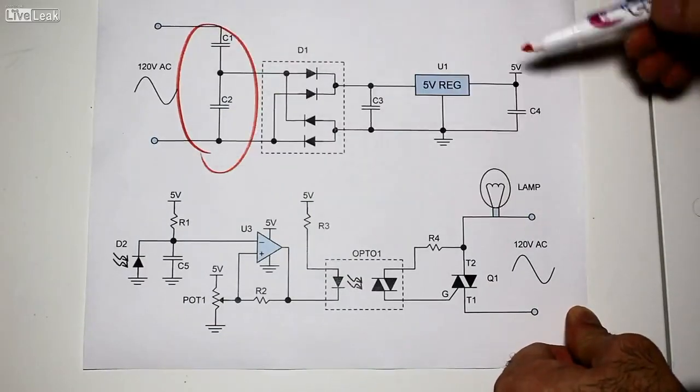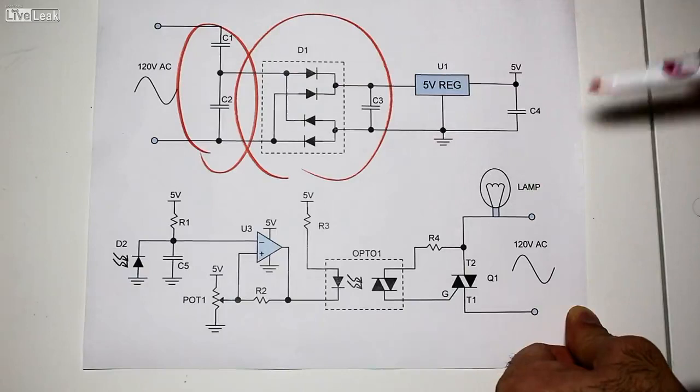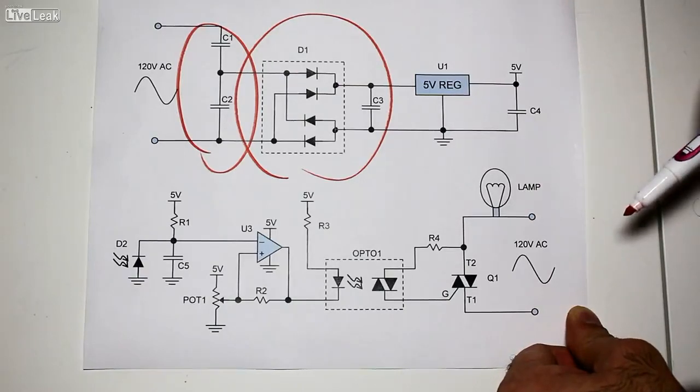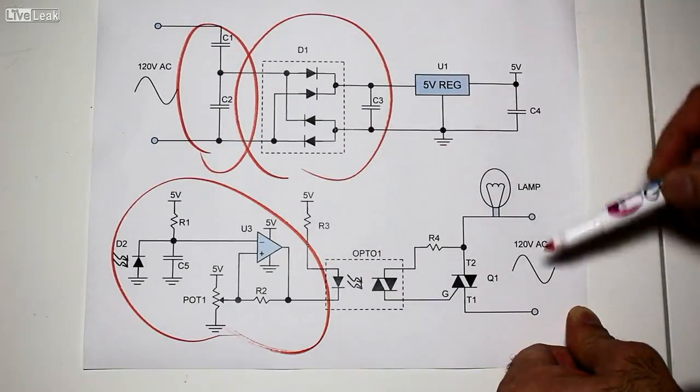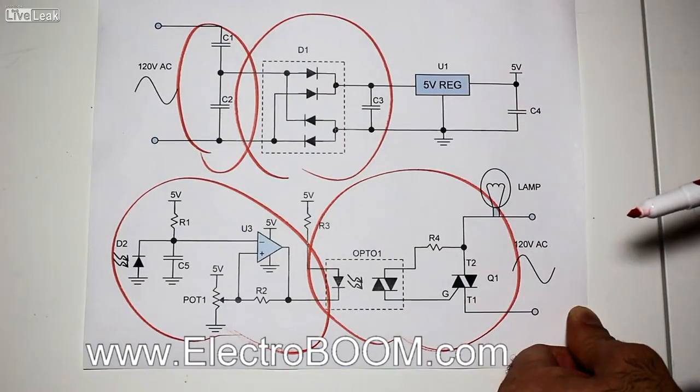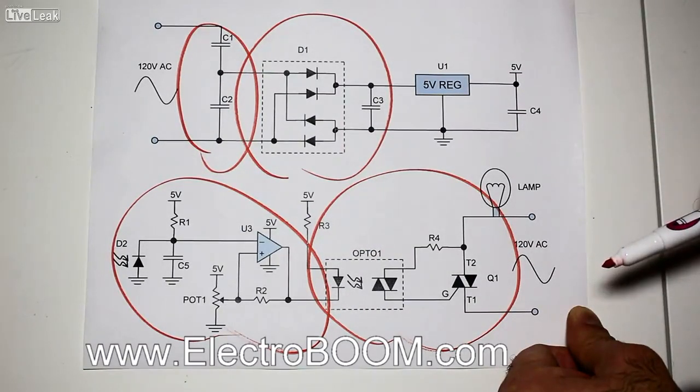It reduces the AC level and rectifies it with the full bridge rectifier, which is really just called a bridge rectifier. It powers the circuit which senses the light and switches light on and off. Please see my website electroboom.com for more details on the circuit.